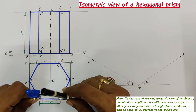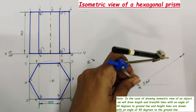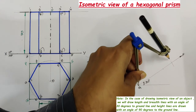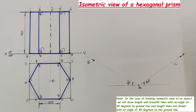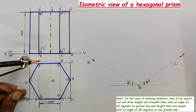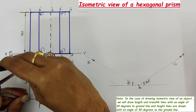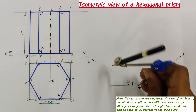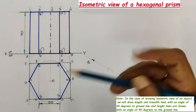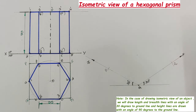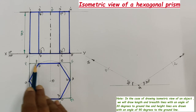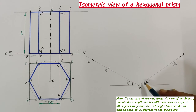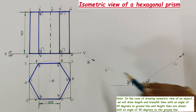With QR as radius and Q as center, draw an arc and name the point R. With QP as radius and Q as center, draw an arc and name the point P. Then draw a line parallel to QR passing through P — this is the PS line. Then draw a line parallel to QP passing through R to complete the isometric view of the rectangle PQRS.